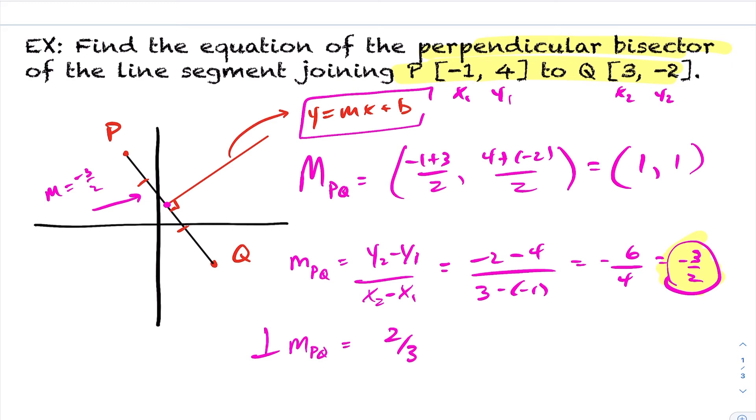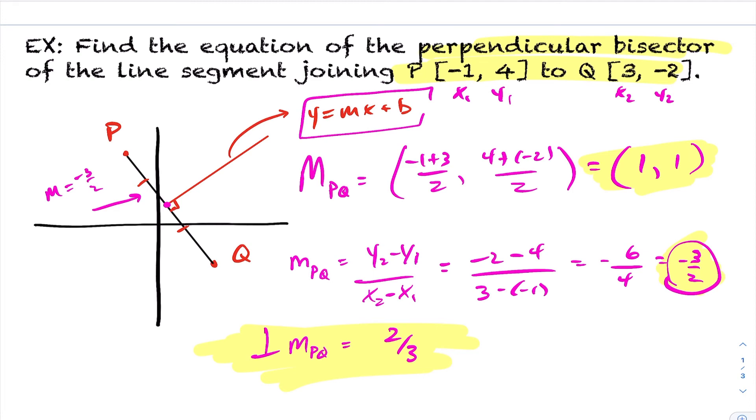So now I'm in a situation where I have the slope of my line is 2 thirds, and I have a point on the line, 1, 1. So putting this information together, I can find the equation of a line.